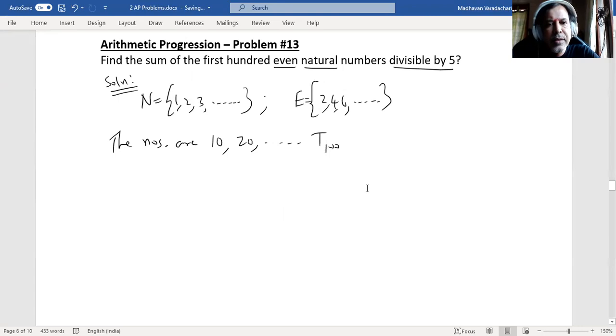The first term A is 10. Since the numbers are even and divisible by 5, the common difference D is 10, visible as 20 minus 10. 25 is divisible by 5 and natural, but it is not even, so we go to 30. Thus, our common difference is 10.